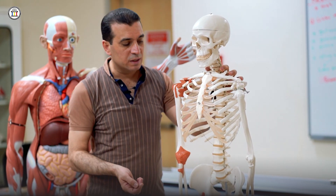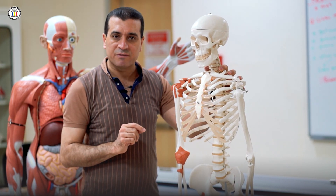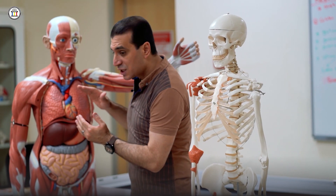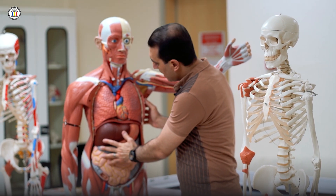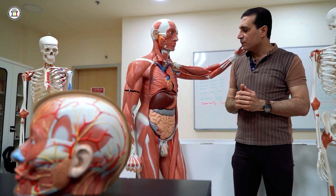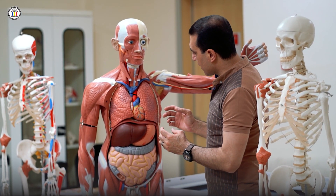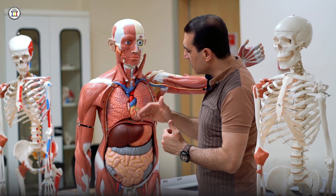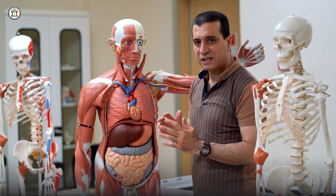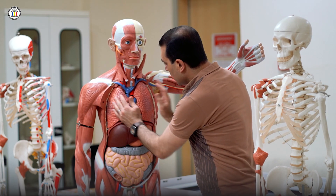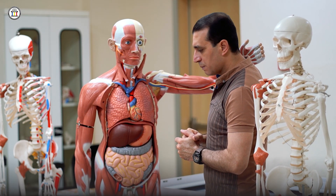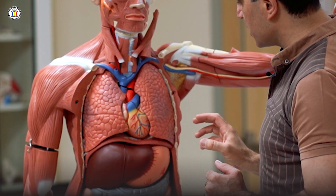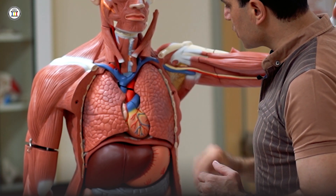Below, we have the inferior wall of the thorax, which is formed by the diaphragm. The diaphragm is the most important muscle of respiration. It is a musculotendinous septum that separates the chest cavity from the abdominal cavity and is regarded as the inferior wall of the chest. The thoracic cavity is divided into a median partition called the mediastinum, which is further divided into superior and inferior, and the inferior is divided into anterior, middle, and posterior mediastinum. Laterally we have the two lungs covered by the pleura. The right lung is usually larger than the left and consists of three lobes, while the left lung is smaller due to the presence of the heart and consists of two lobes.